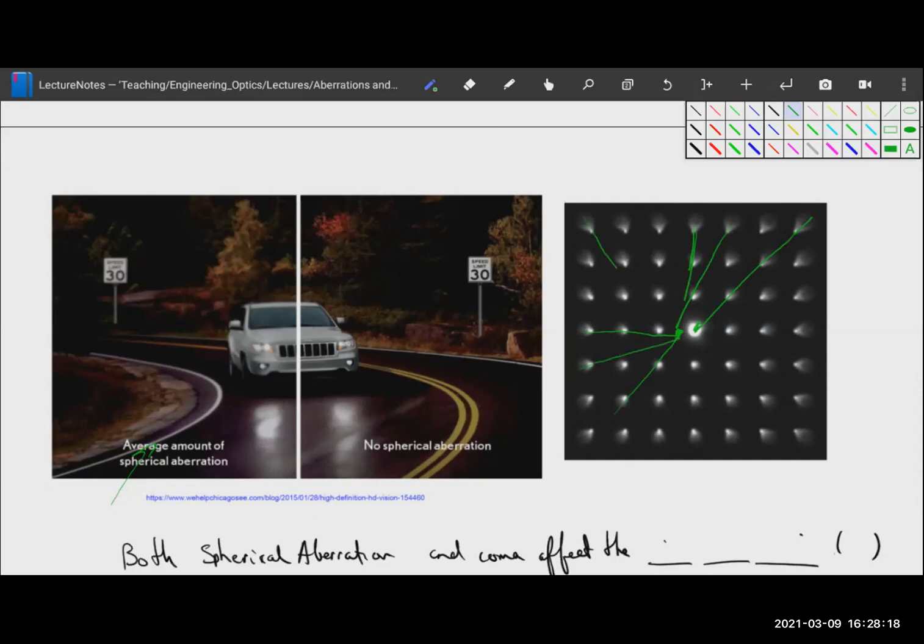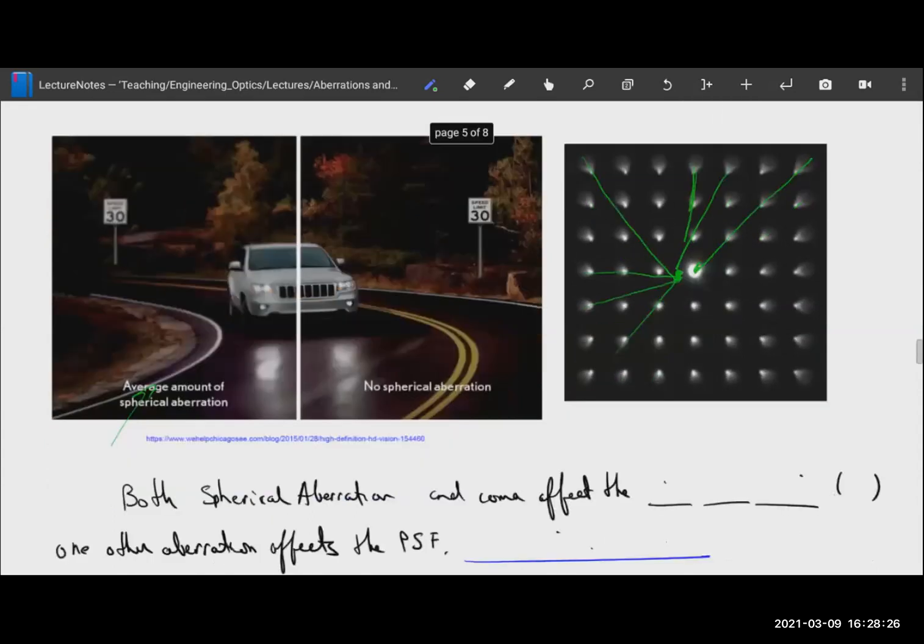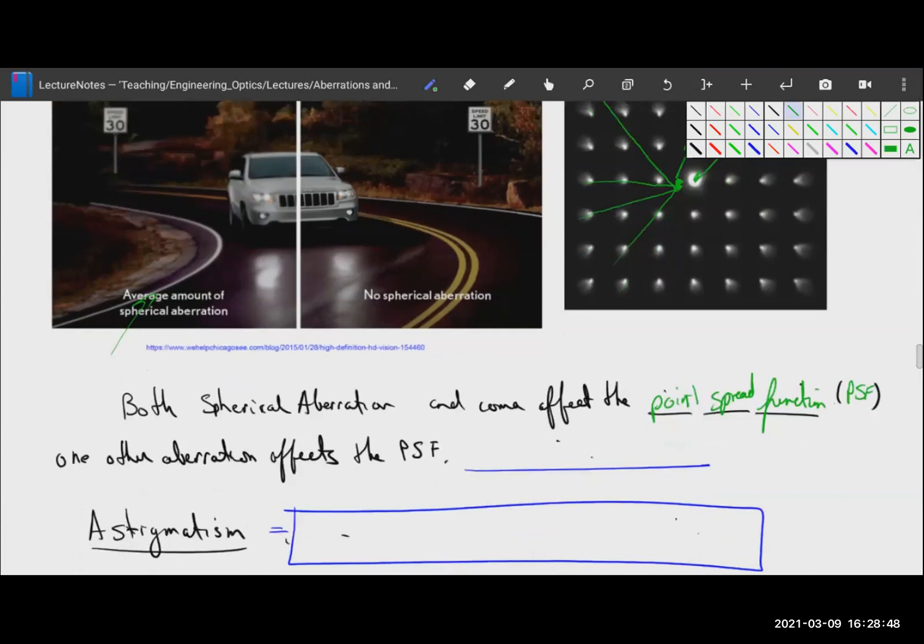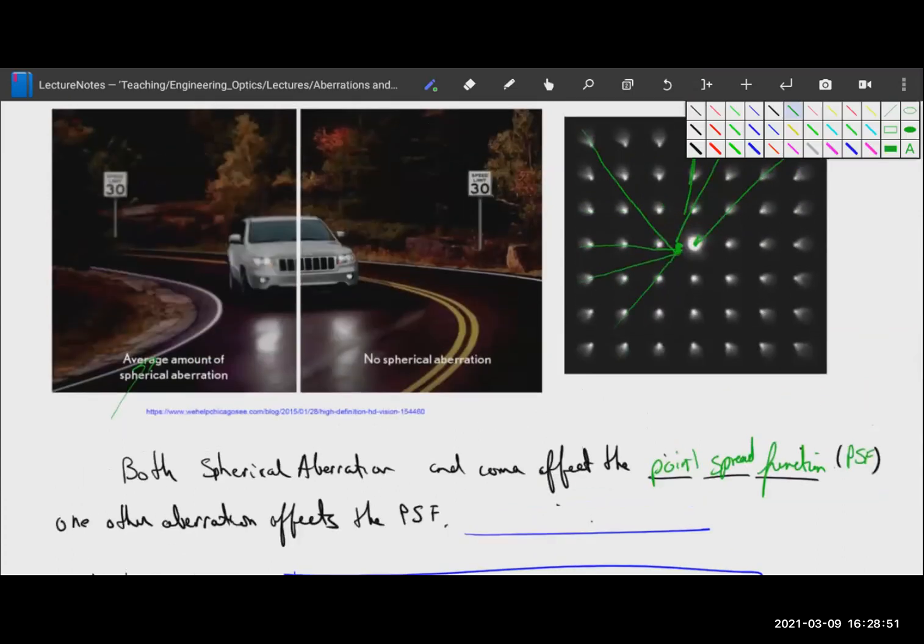You can tell where the optical axis is because all of these rays, all these comets point to that. Now, spherical aberration and coma are important because they both affect the point spread function of an optical system, also called a PSF. Point spread function is important because a point spread function is essentially the image of a point, a single point of light.